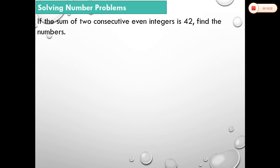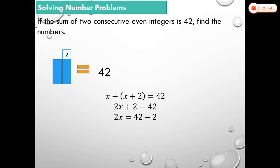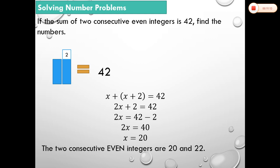Another example: If the sum of two consecutive even integers is 42, find the numbers. Let the blue rectangle denote the first even integer. Since even integers differ by 2, the next integer is x + 2. Their sum equals 42, so x + (x + 2) = 42. Then 2x + 2 = 42, so 2x = 40, and x = 20. The two consecutive even integers are 20 and 22.